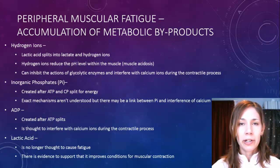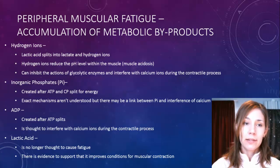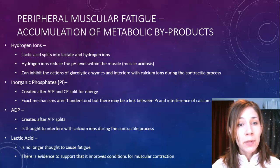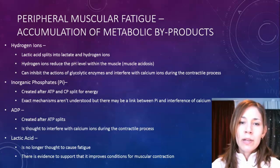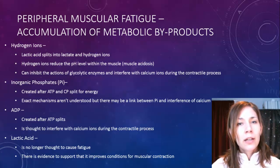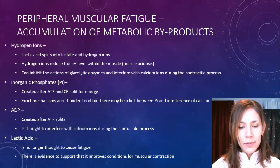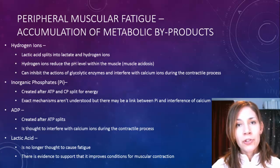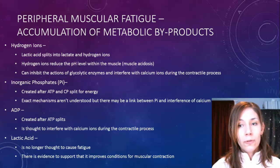Accumulation of metabolic byproducts is basically a build-up of wastes. A main one is hydrogen ions, which come about when lactic acid splits into lactate and hydrogen ions. They create a state called muscle acidosis, where the pH level drops and makes the muscle environment quite acidic — not a good environment for glycolytic enzymes to function in. Glycolytic enzymes help process glycogen, so if they can't function because the environment is too acidic, the process of creating energy via glycogen stops.